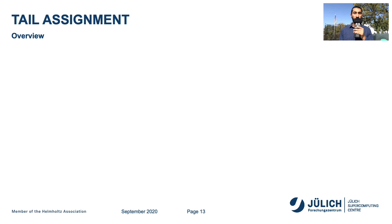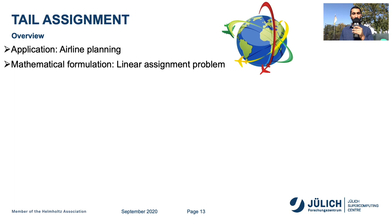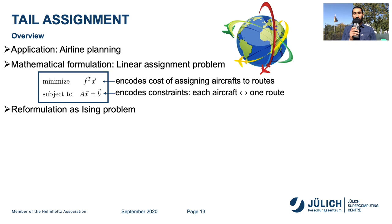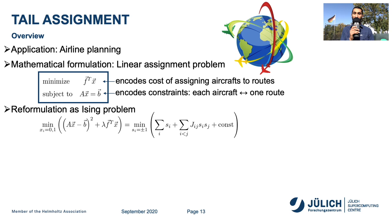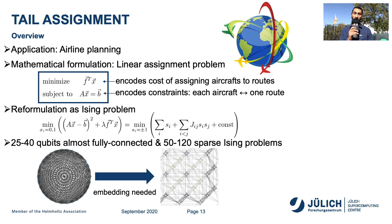The last benchmarking problem we look at is the Tail Assignment problem. It finds real-world applications in, for example, airline planning. Mathematically, it is a linear assignment problem which involves minimizing a function subject to a constraint. The function may encode the cost of assigning aircraft to routes, and the constraint may encode that each aircraft has a unique route. To implement this on a quantum device, we reformulate it into an annealing problem. We implement problems on 25 to 40 qubits which are almost fully connected, and on 50 to 120 qubits which are sparsely connected, and this work was done in collaboration with external collaborators.